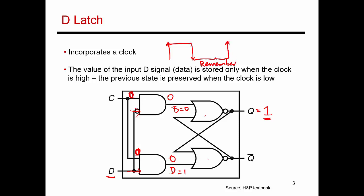When the clock goes high again, now I'm in a state where I'm willing to look at my input D, and my output reflects whatever my input is. So at this point, Q is essentially D. And in the low state, Q is in the remember state, where it just remembers what its last value was. So we've designed a latch that has a clock, where during the high phase, my output simply mirrors my input value D, and in the low state, I just remember what my last value was. I'm guaranteed that my output is not going to change during the low phase.